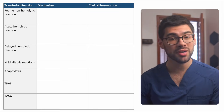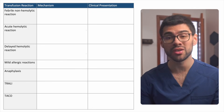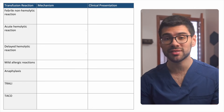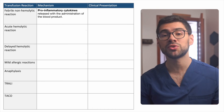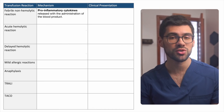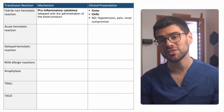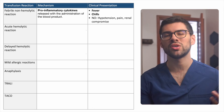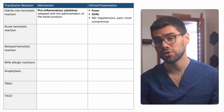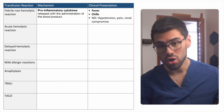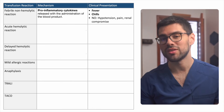Let's start with the febrile non-hemolytic reaction. This is the most common and usually the mildest syndrome of the bunch. It is believed to be caused by pro-inflammatory cytokines released with the administration of the blood product. It presents with fever and chills that begin within one to four hours after the transfusion starts. Importantly, there's no hypotension, no low back pain, and no renal compromise.